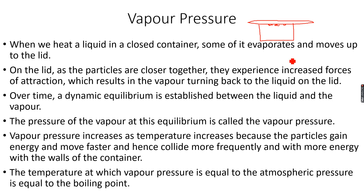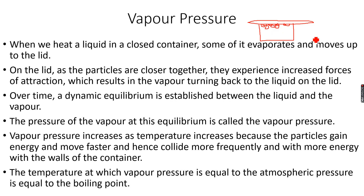So what happened during evaporation? Bonds were broken — that's why a liquid turned into a gas. But at the lid, the gas particles are coming closer together to form a liquid. That's why you see liquid droplets forming there.